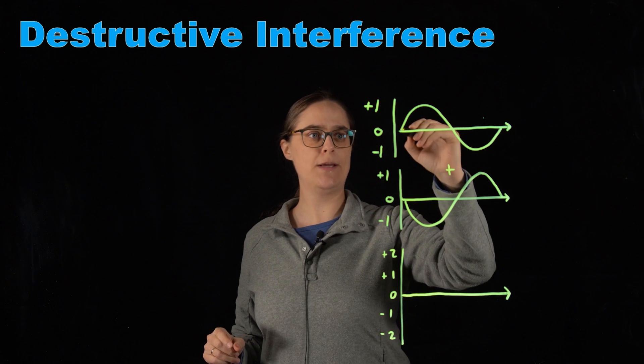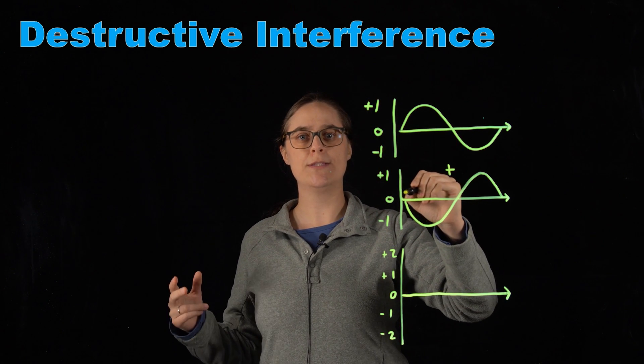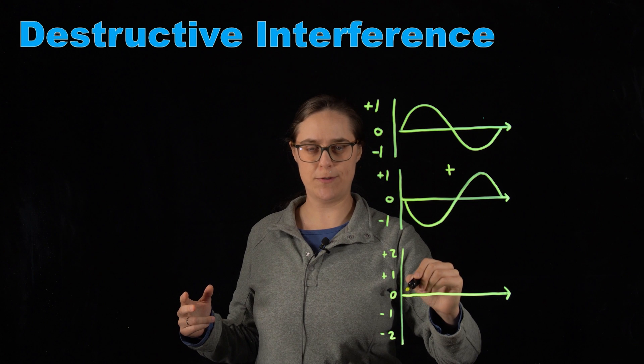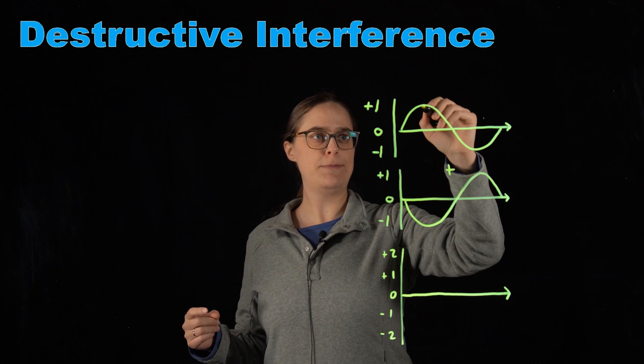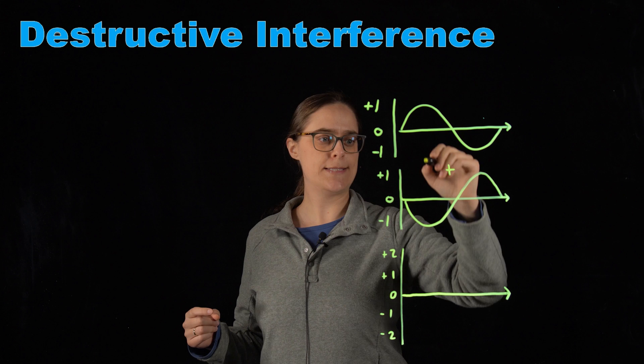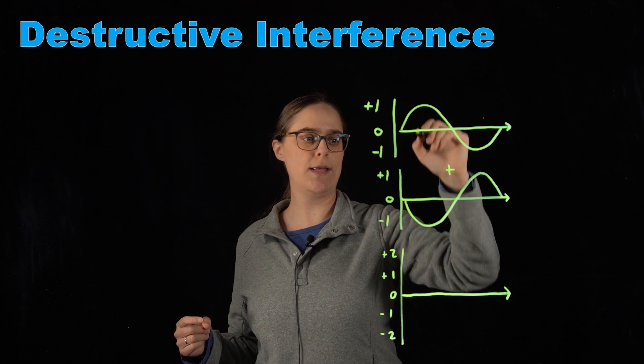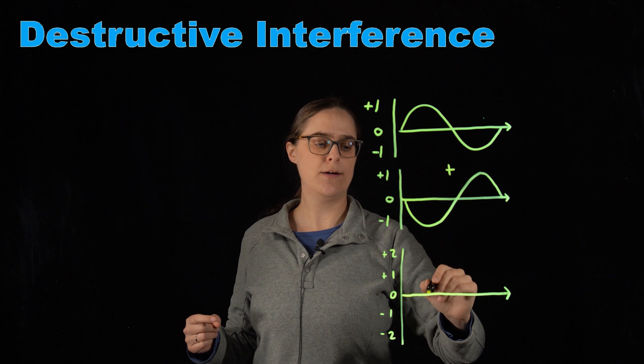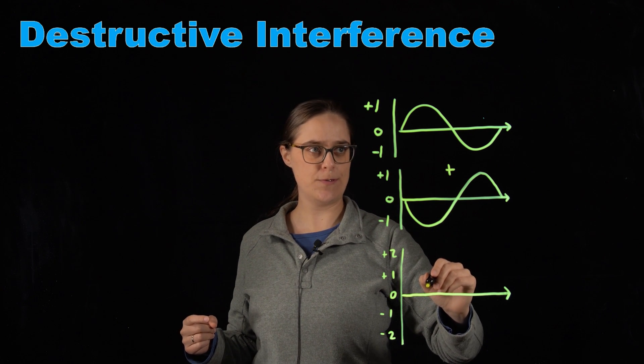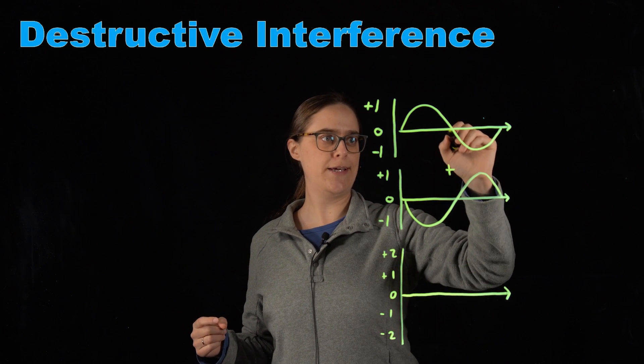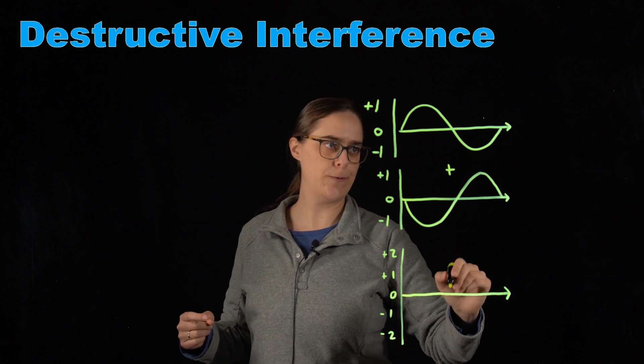So at the very beginning we have 0 plus 0, so our resultant wave would have an amplitude of 0. This peak has an amplitude of positive 1. It's aligned with a valley with an amplitude of negative 1. So 1 plus negative 1, our resultant wave has an amplitude of 0. Crossing the line, once again, 0 plus 0 equals 0.